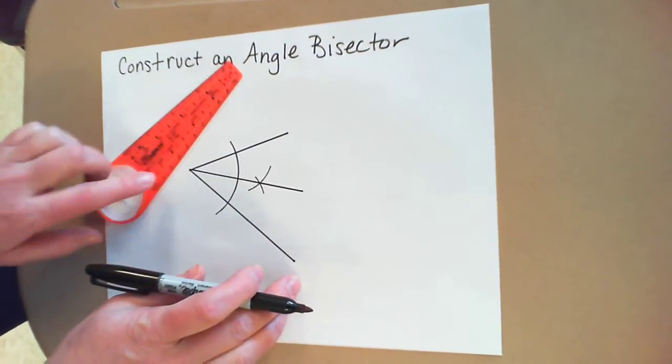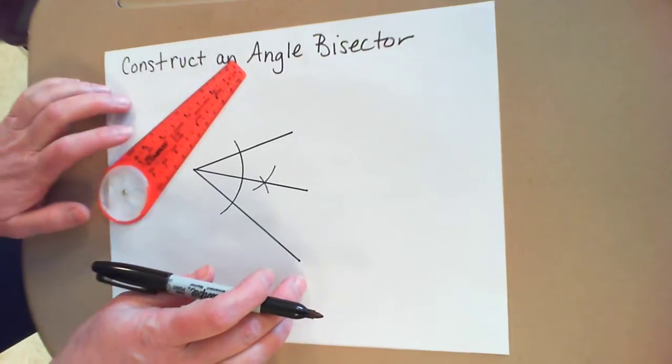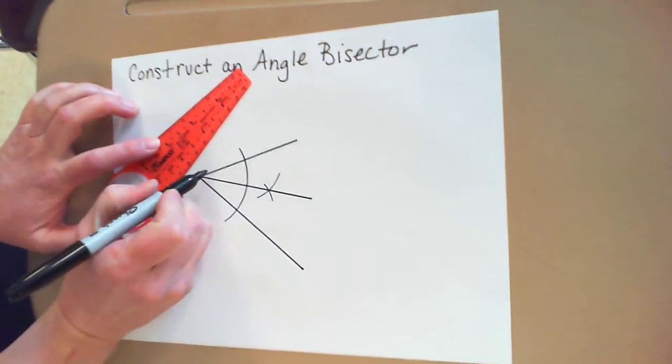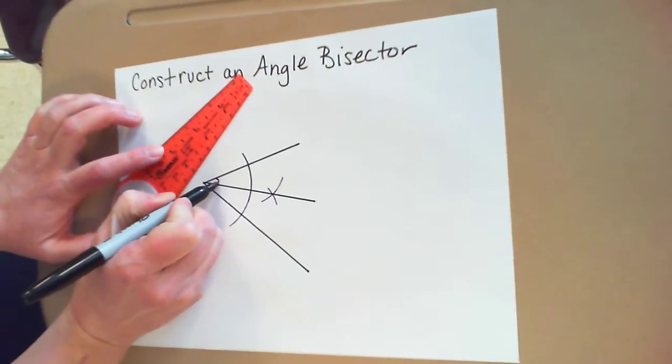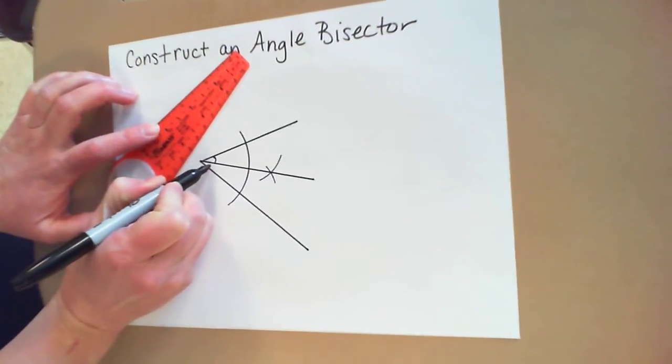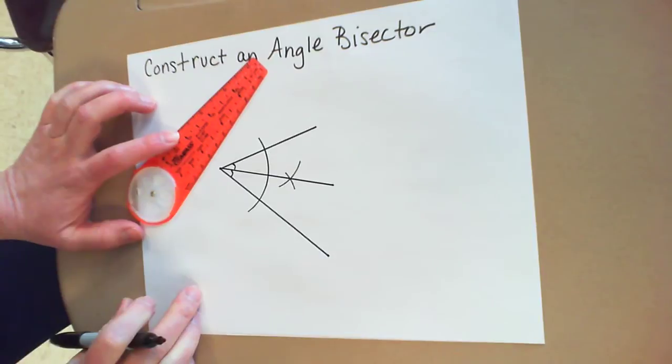And don't forget, if you're making an angle bisector, you split an angle in half, so you need to mark both as being congruent.